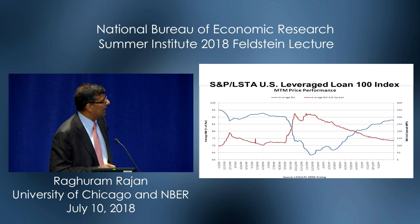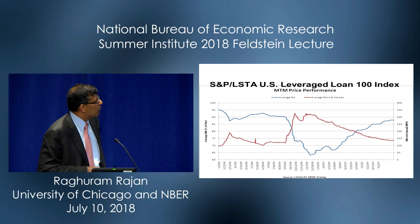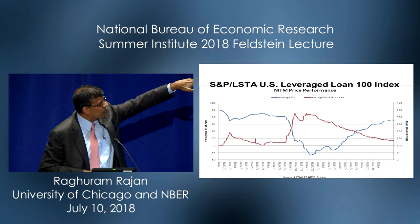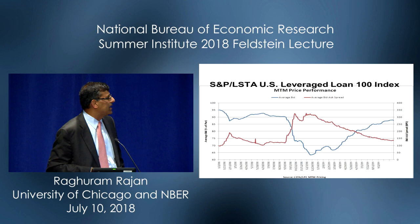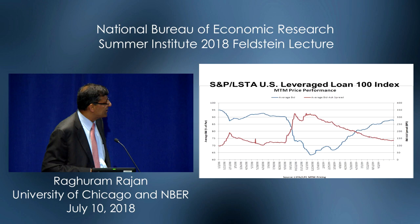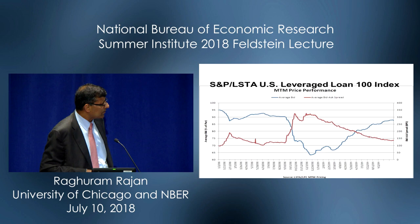If you look at things like bid-ask spreads, what you see is the average bid-ask spread — the brown line — for derivatives on the leveraged loan index essentially went up tremendously, then started coming down gently, and by about mid-to-late 2009 it had come back to its old levels. Similarly, if you look at the average bid price for instruments on this index, it collapsed from about 90 cents to the dollar to 60–63 cents, and then steadily climbed up.